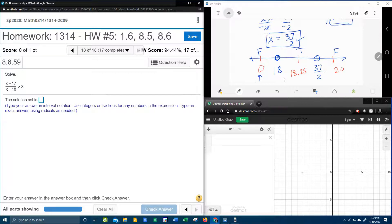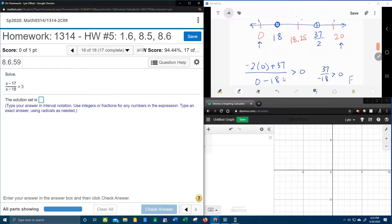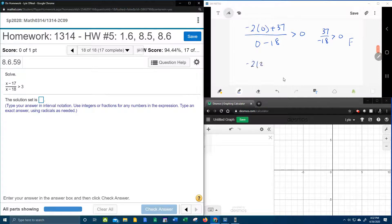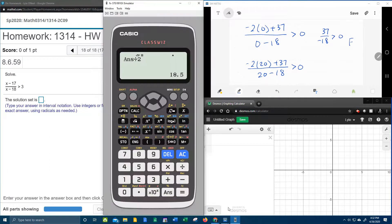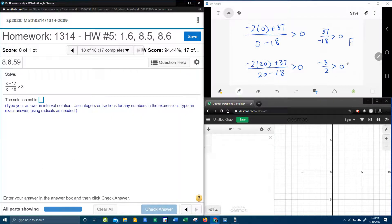Let me check and make sure. I'll check 20 next because it's easiest. That's (-2(20) + 37)/(20 - 18). Using my calculator with the fraction button, I can enter this all at once, and it gives me -3/2. Is -3/2 greater than 0? No, that's false, which I predicted.